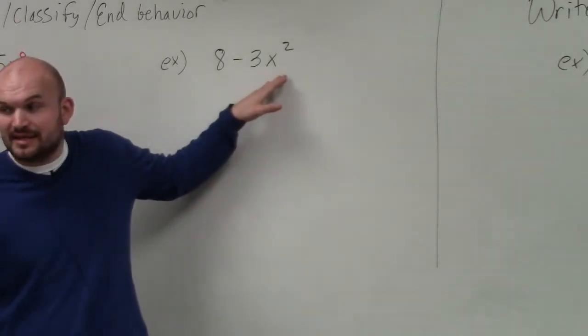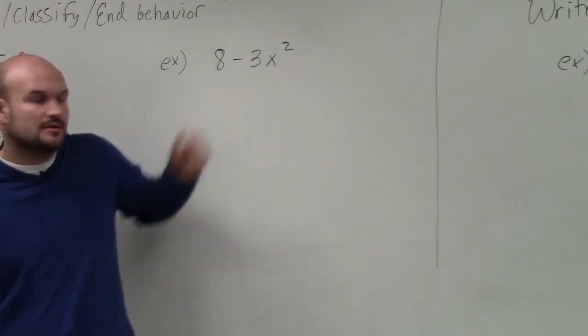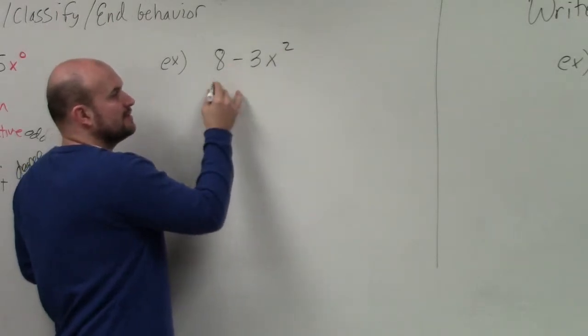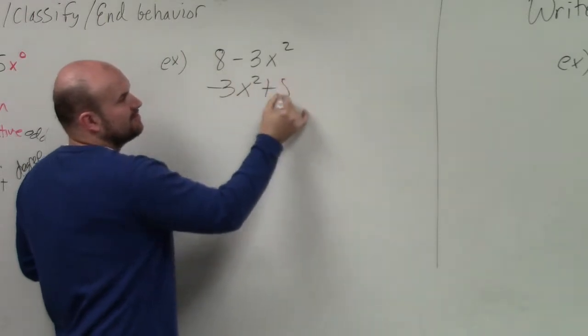Now in this example, you guys can see that this is not in descending order. So what we're going to do is I'm going to rewrite this. Now notice that 3 is negative, so I'm going to rewrite this as -3x². That 8 is positive, so it's +8.